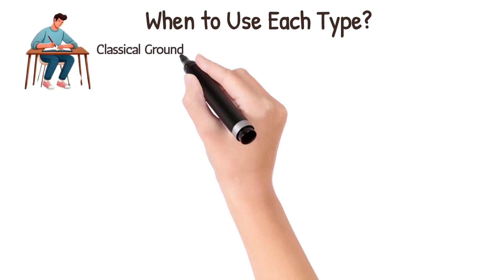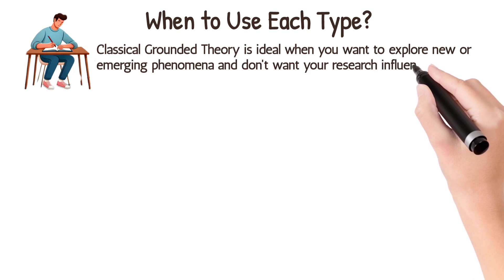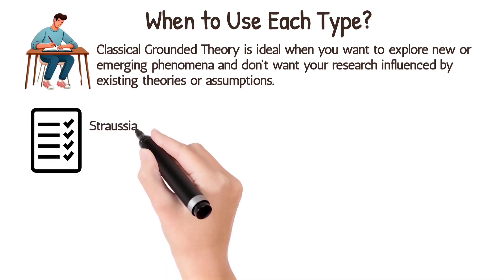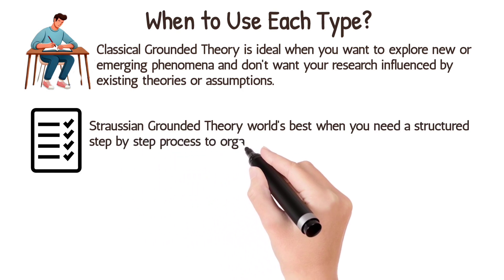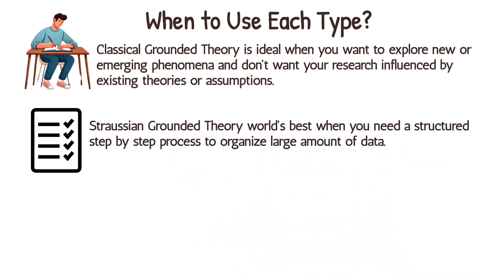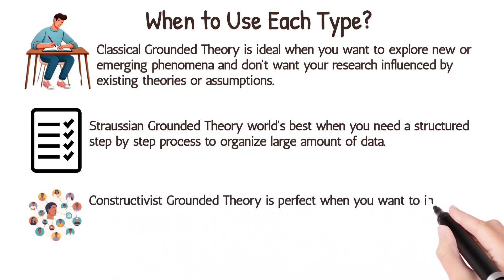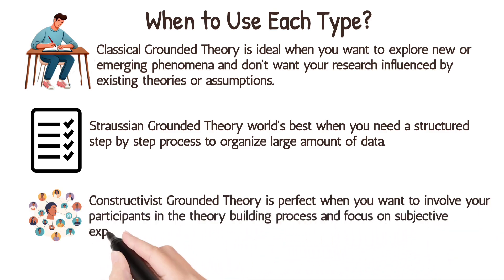Classical grounded theory is ideal when you want to explore new or emerging phenomena and don't want your research influenced by existing theories or assumptions. Straussian grounded theory works best when you need a structured, step-by-step process to organize large amounts of data. Constructivist grounded theory is perfect when you want to involve your participants in the theory-building process and focus on subjective experiences.